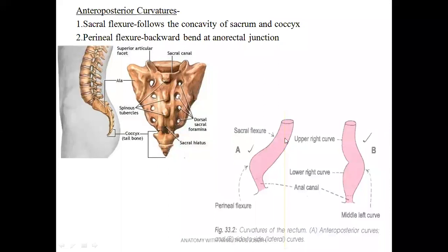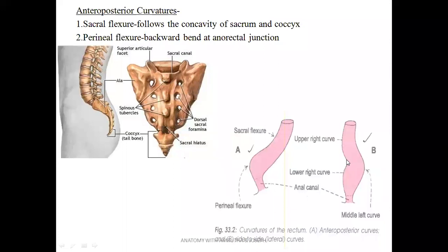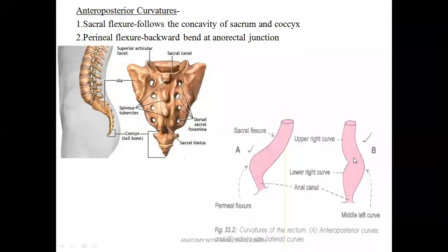This is a picture of the sacrum. The anterior and posterior aspects can be seen. In another view, we can see the anterior aspect — you are looking at the anterior aspect — and what is behind is posterior. So anterior is here and posterior is here, whereas in this view what we are seeing is anterior and what is behind the screen is posterior.